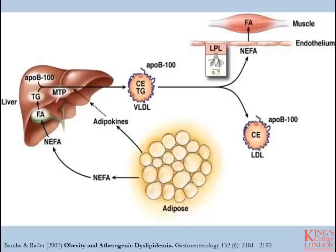Once taken up by the liver, these fatty acids can be packaged into triglycerides and combined with ApoB100 into VLDL particles, which are then released into circulation. These VLDL particles are then free to migrate to the tissues requiring lipid. They are acted upon by lipoprotein lipase, resulting in a delipidated or triglyceride-poor lipoprotein and a conversion to LDL. This LDL particle then takes part in the remainder of the endogenous lipid transport pathway.